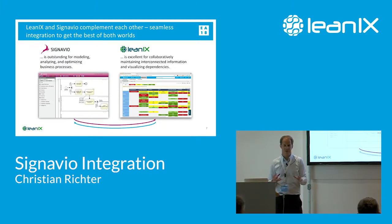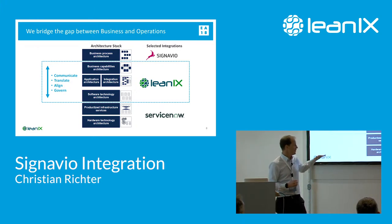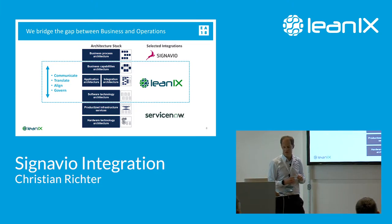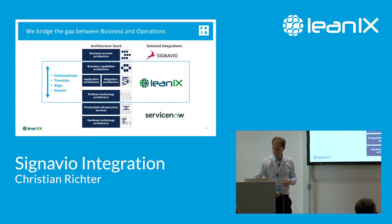On the other hand, LeanIX allows you to analyze processes and see what kind of interconnection really exists. LeanIX bridges the gap between infrastructure tools like CMDBs and ServiceNow on one end, and business process management tools like Signavio on the other — building the translation via an application layer to enable communication between the technical layer and the business architecture, and to avoid data silos.